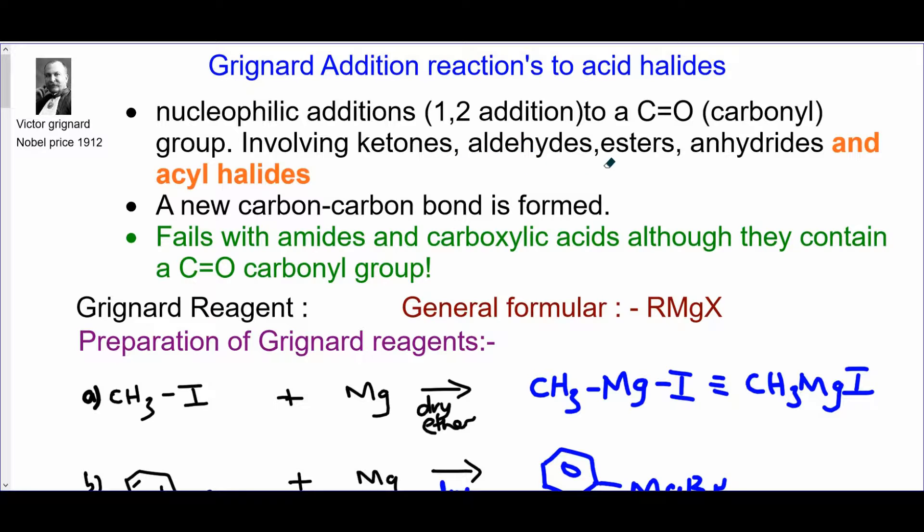Then the carbonyl could be a ketone, an aldehyde, an ester, anhydride, or acid chloride. I've already done a reaction about ketones, aldehydes, and esters. Today I'm going to talk about acyl halides.